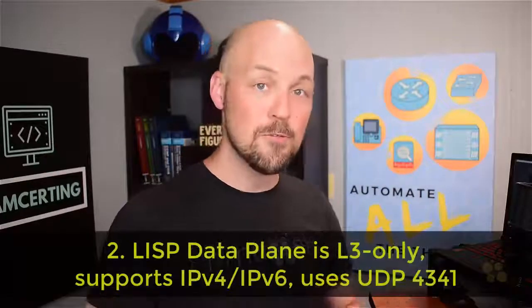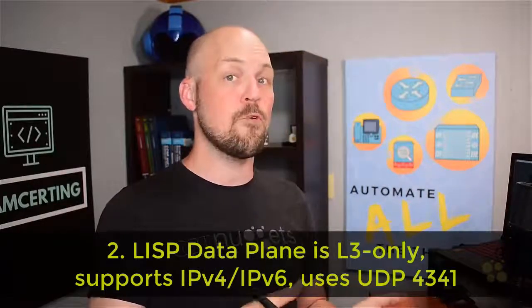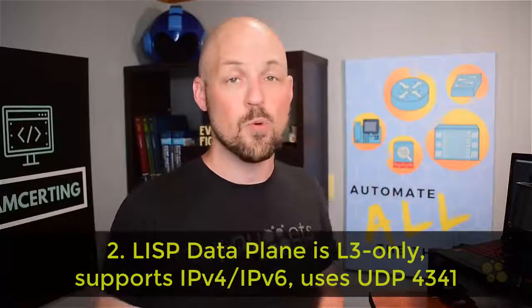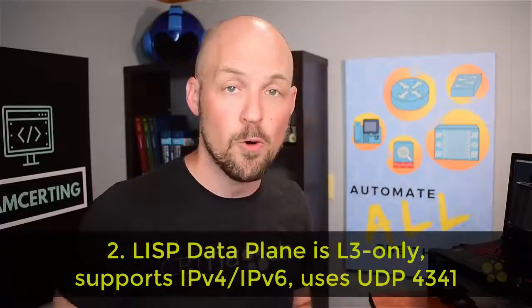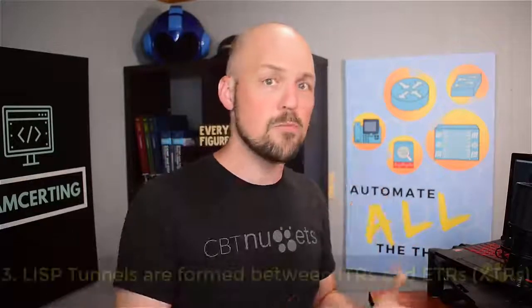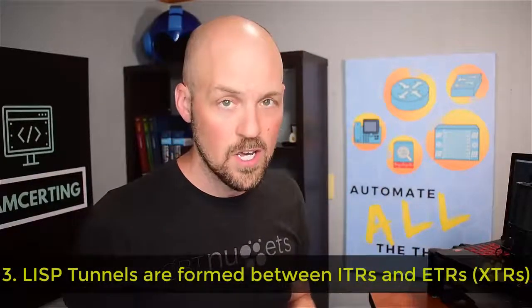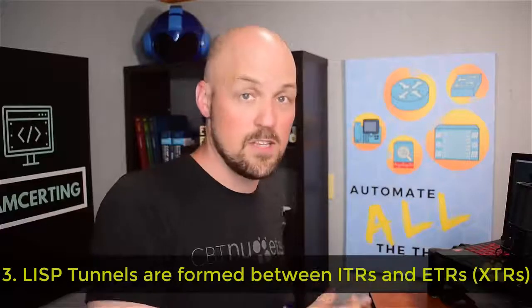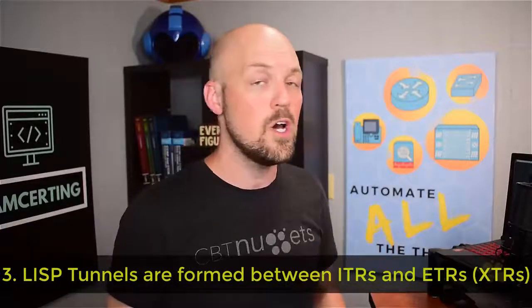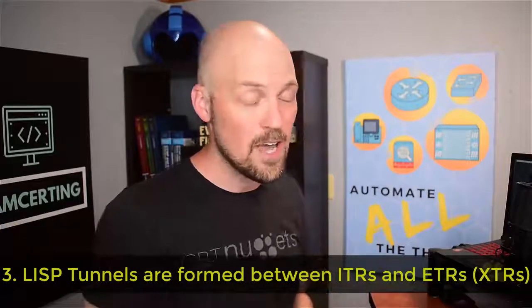Now, from a data plane perspective, we are IP-based, or layer 3 only, but we can support IPv4 and IPv6. And remember, we use UDP port 4341 as our destination. We scramble or choose different source ports to help load balance in the fabric. Last but not least, from a data plane perspective as well, tunnels are built between ITRs and ETRs. Again, we call those fabric edge nodes in the SDA world, in the LISP world, we call them ITRs and ETRs. Or again, if we want to speak generically about them, we can call them XTRs.